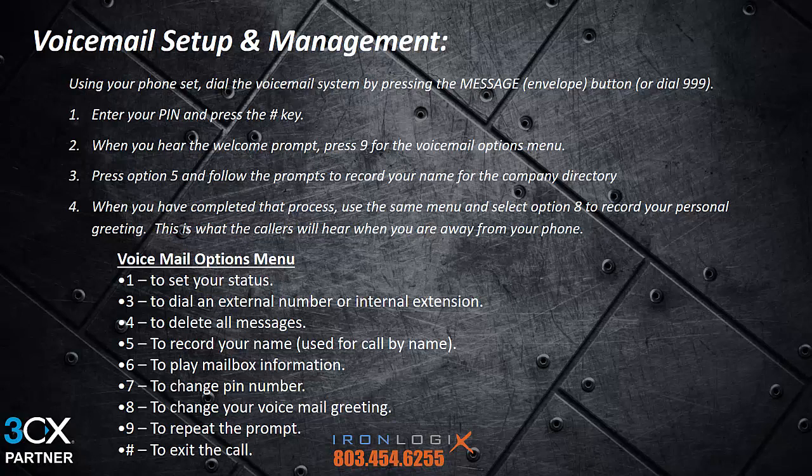Now that you have your cheat sheet picture ready, let's continue with the voicemail system. Hit option 9 and then use option 5 to record your name for the company directory. Simply state your first and last name and press pound and zero to save it. If you get tongue tied or otherwise mess it up, either hang up and repeat the process or use the other options within that menu to re-record your name. Go ahead and pause the video now while you do this step.